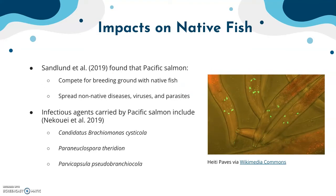Pacific salmon also compete for breeding ground with native fish, making it harder for native fish to continue breeding. They also spread non-native diseases, viruses, and parasites — such as nematodes, trematodes, and cestodes. Infectious agents found in BC Pacific salmon include Candidatus Brachiomonas cysticola, Paranucleospora theridien, and Parvocapsula pseudobranchiocola. These contribute to gill, brain, heart, and liver diseases in fish and can be passed to native fish. These three were the most prevalent and heavily contributed to deaths of native fish in BC in this study.